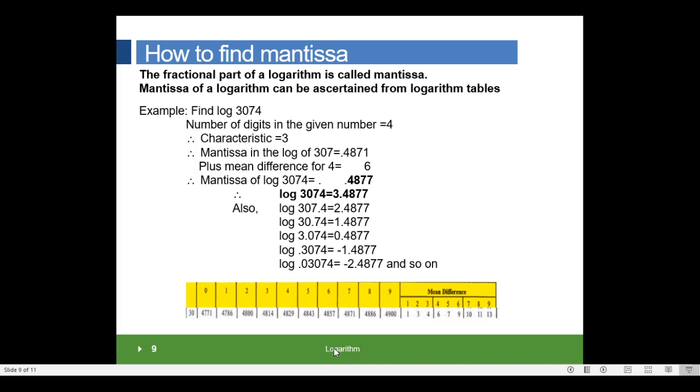Now, let us see how to find mantissa. The fractional part of logarithm is called mantissa. Mantissa of a logarithm can be ascertained from logarithm tables. The log of the first four significant digits in which they occur should be taken, irrespective of the position of the decimal point.